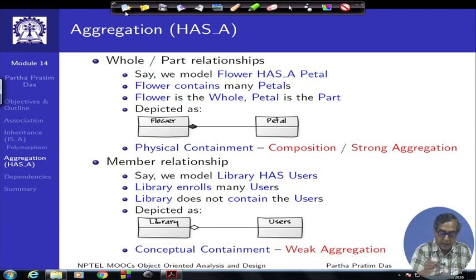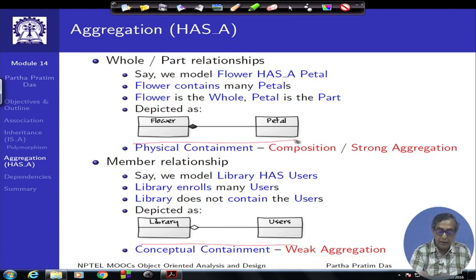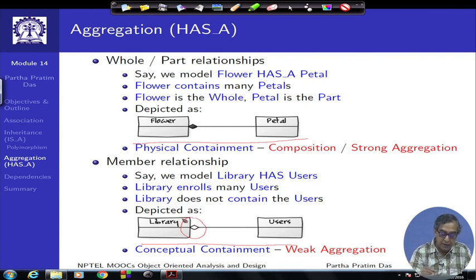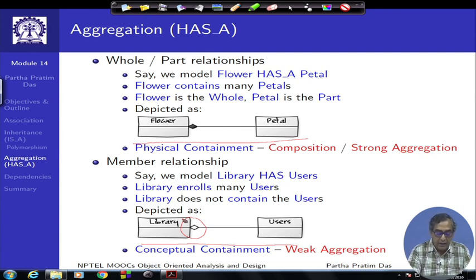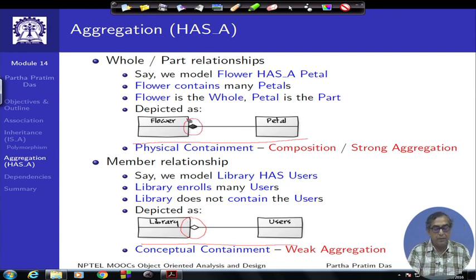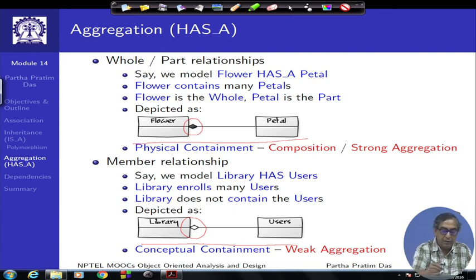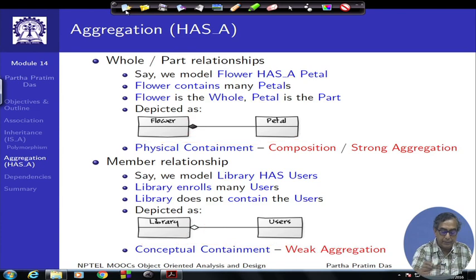In diagrammatic depiction, weak aggregation uses an empty diamond, while strong aggregation uses a filled diamond at the whole end. This allows you to distinguish the two types of aggregation clearly in a diagram.